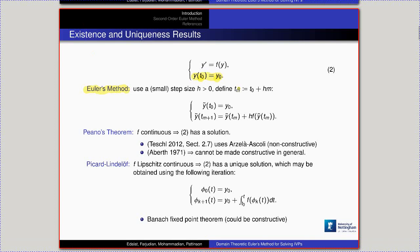Here's a formal account: we discretize the time domain and define a standard sequence. Using this method we can prove that continuity of the field alone guarantees that the IVP has a solution — this is Peano's theorem. There's a nice proof in Teschl's book using the Arzelà-Ascoli theorem. However, Arzelà-Ascoli uses a compactness condition to yield a convergent subsequence, so it's not constructive. In fact, Pour-El and Richards (1979) showed that an IVP can have all computable components yet not even a single computable solution.